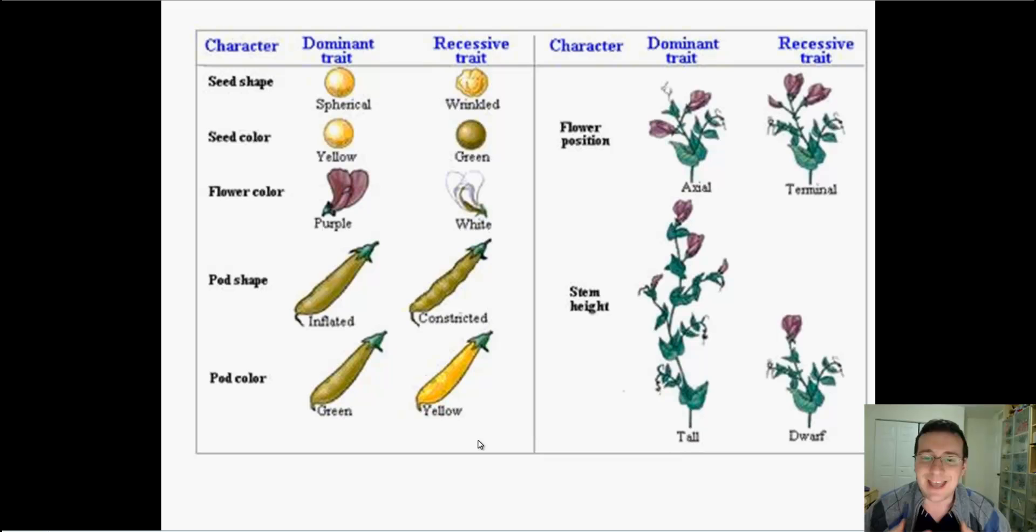He spent seven years studying the features of that pea plant. He studied several different characters which had different traits. But the cool thing about pea plants is that they have very discrete characters. Unlike humans which have characters like eye color, skin color, hair color, which are made of multiple thousands of different things.